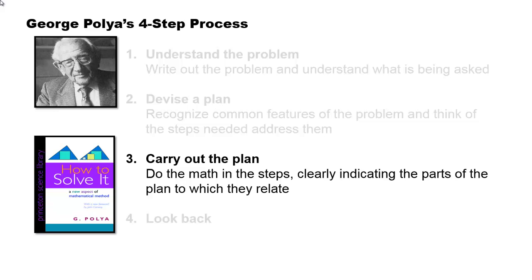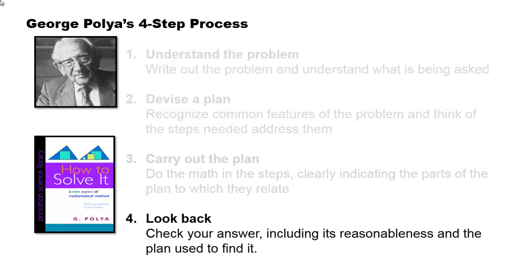But getting a final answer isn't the end of the process. The last step is to look back at what you've done. Check your answer if you can. If you can't get a complete check of your answer, perhaps you can check its reasonableness, or maybe you can re-examine the plan you used to find it. This is the part that makes the homework an active learning process. You're never done by boxing the answer. You should always spend some time thinking about what that answer is and how you got it.